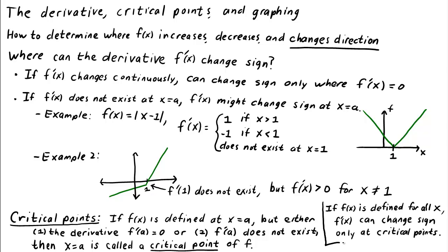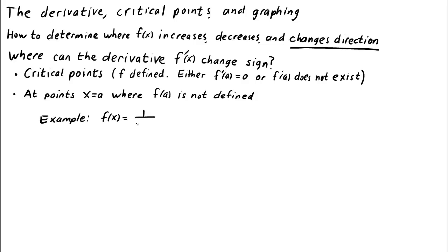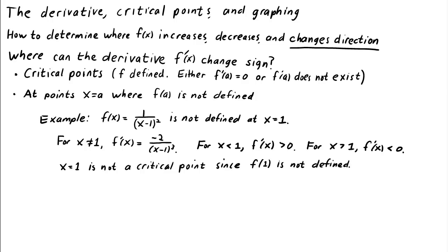If a function is defined everywhere, then the only points where its derivative can change sign are critical points. Besides at critical points, the derivative could also change sign at points where the function itself is not defined. For example, the function f of x equals 1 divided by x minus 1 squared is not defined at x equals 1. For x not equal to 1, its derivative is f prime of x equals negative 2 divided by x minus 1 cubed. The derivative changes sign at x equals 1: for x less than 1, f prime of x is greater than 0, and for x greater than 1, f prime of x is less than 0. However, since f of x is not defined at x equals 1, the point x equals 1 is not considered a critical point.